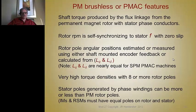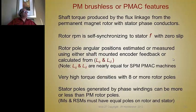Very high torque densities are possible with these machines, as long as the number of poles is high. The PM machine is the closest you get to something for nothing in this world, because once you pay for the magnets and have them installed in the motor, you get the magnetic field from the magnets forever.